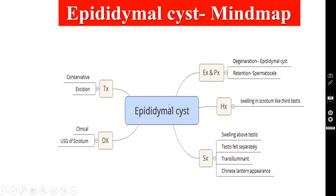This is the mind map. Mind maps are very useful to review or revise the whole syllabus of surgery within a few hours. Coming to the etiopathogenesis — if degeneration is the etiology, the degeneration cyst is known as epididymal cyst. If it is a retention cyst, it is spermatocele, which is very common in those undergoing vasectomy, because all the sperm will be retained and this retention cyst will eventually cause the spermatocele.